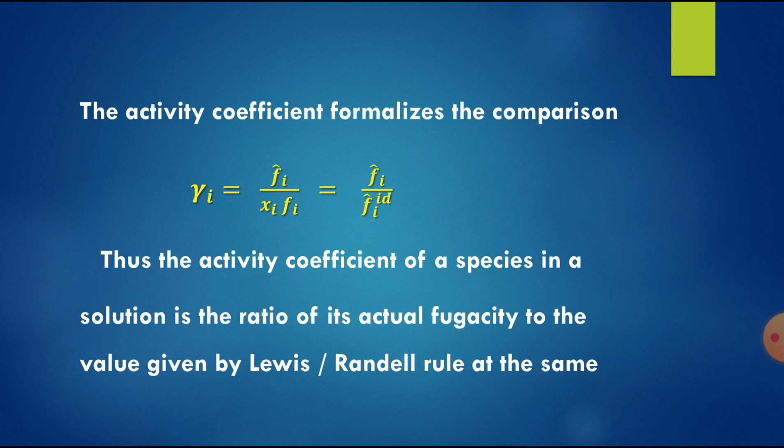The Activity Coefficient can be written as gamma_i equal to F_i cap divided by x_i F_i. This can also be written as F_i cap divided by F_i cap ideal, where F_i cap ideal equals x_i F_i. So F_i cap ideal represents the ideal solution fugacity. The activity coefficient of a species in a solution is the ratio of its actual fugacity to the value given by the Lewis-Randall Rule at the same temperature and pressure.